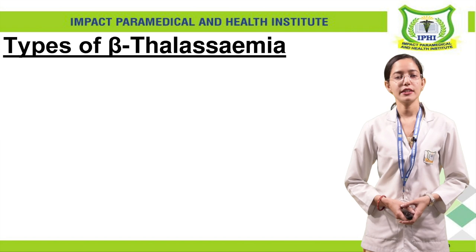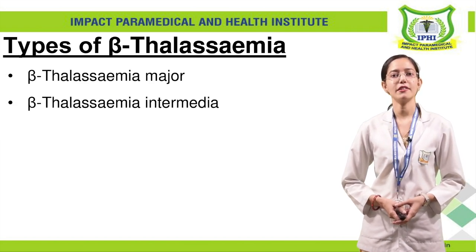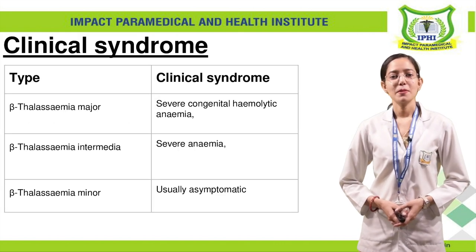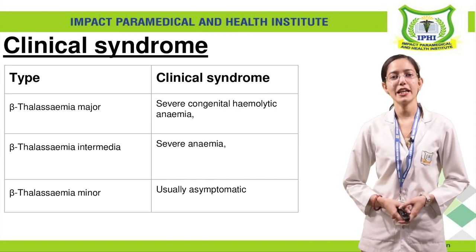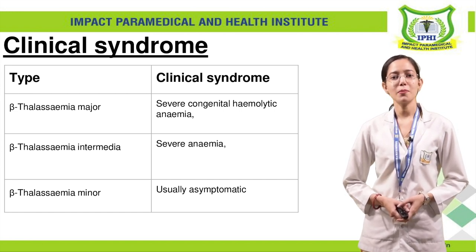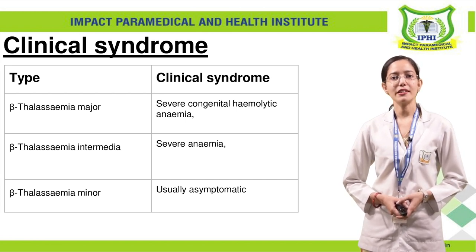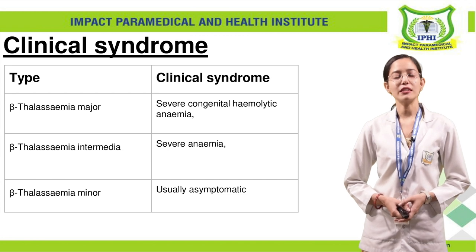We can further categorize beta-thalassemia into three stages: the first is beta-thalassemia major, the second is beta-thalassemia intermediate, and the third is beta-thalassemia minor. We can do clinical classification on the basis of severity. Beta-thalassemia major is severe congenital hemolytic anemia; beta-thalassemia intermediate presents with severe anemia; and beta-thalassemia minor is asymptomatic — it does not show any symptoms.